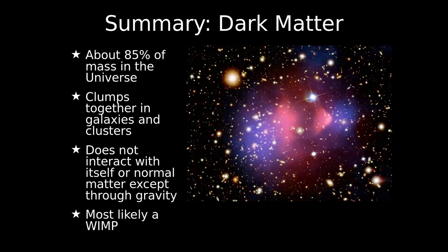To summarize: we found that about 85% of the mass of the universe is dark matter — something we know very little about. It does clump together in galaxies and clusters, as you can see in the blue on the right. It really doesn't interact much with itself or normal matter. The only reason we know it exists is because of gravity — we see it bend light and make galaxies spin faster than they should. Our most likely explanation is that it's a WIMP, a weakly interacting massive particle.